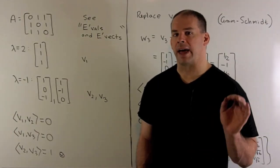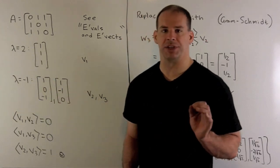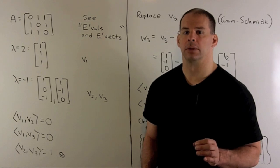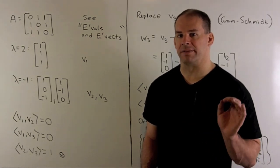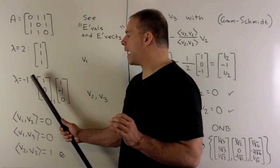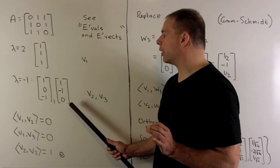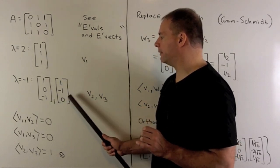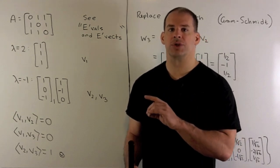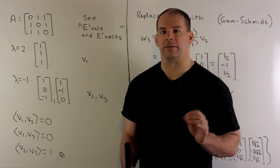For our matrix A, eigenvalues are going to be 2 and minus 1 with multiplicity 2. That verifies that our eigenvalues are real. For the corresponding basis of eigenvectors, for 2 we have 1, 1, 1. For minus 1 we have 1, 0, minus 1, and 1, minus 1, 0. We'll call these V1, V2, and V3. You should check those; if you want to see the work, that's in an earlier video on eigenvalues and eigenvectors.